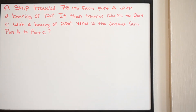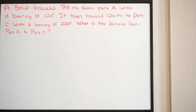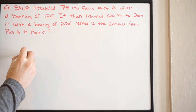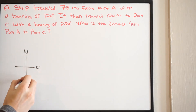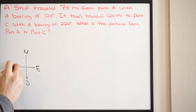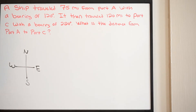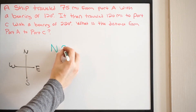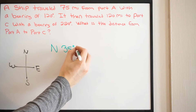This problem is a bit different than the ones we were doing in the past. If you remember the direction problems, our direction was given with two cardinal points. So on a compass we have north, east, south, and west. In the last problems we were doing, the direction would look like north 35 degrees east.